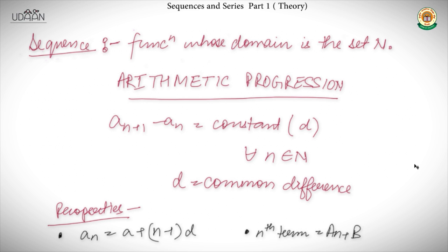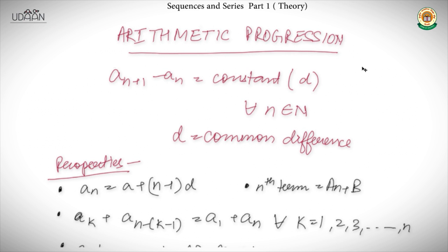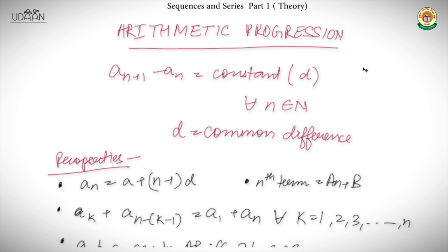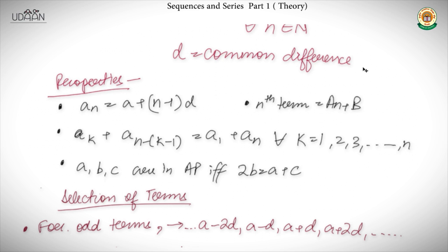We start with arithmetic progression. There is just one basic rule: the difference between a term and its previous term always remains constant. A sequence is called an AP if we define the nth term as aₙ and the (n+1)th term as aₙ₊₁, then aₙ₊₁ − aₙ is always a constant, which we define as the common difference d of the arithmetic progression, where n belongs to the set of natural numbers. The nth term is defined as aₙ = a + (n−1)d, where a is the first term and d is the common difference.